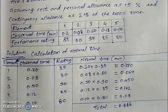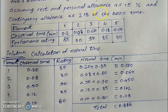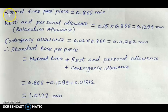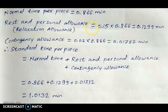Now let us determine the allowances. Rest and personal allowance, that is relaxation allowance, is 15% of basic time, and contingency allowance is 2% of basic time. The normal time per cycle is 0.866 minutes. Therefore, relaxation allowance equals 0.15 multiplied by 0.866, giving 0.1299 minutes. Contingency allowance is 2% of the normal time, calculated similarly.